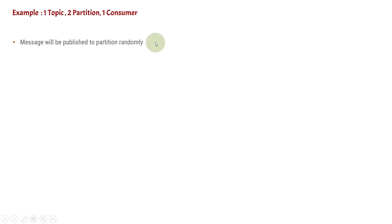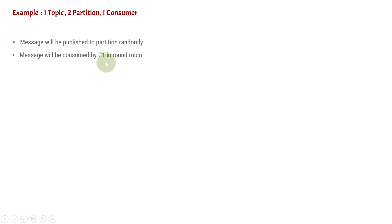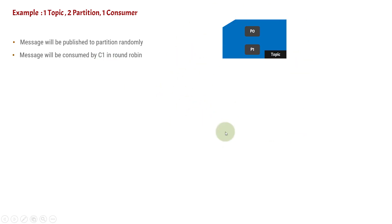The message will be published to the partitions randomly, since we are having two partitions and there is a producer. So the message will be published randomly. Now, the message will be consumed by C1 in round robin. If you have a single consumer with two partitions, the C1 will consume messages in round robin — one after the other. Let's say this is a topic inside your Kafka cluster and there are two partitions, P0 and P1.